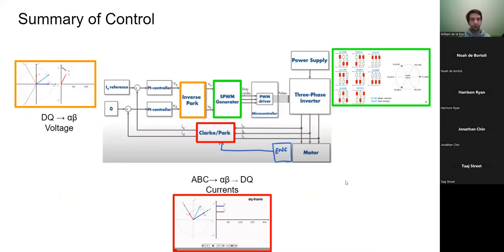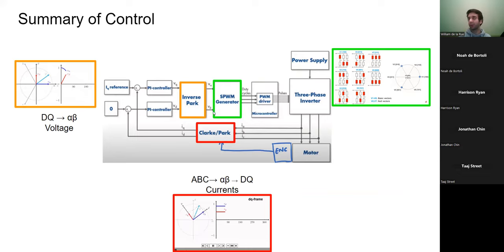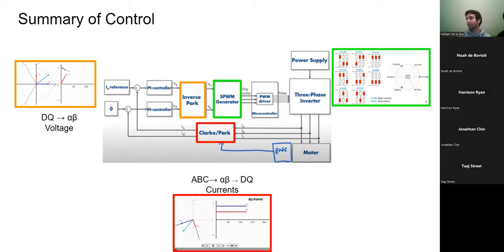Summary of last week: the three main takeaways are Clark and Park transforms. We use them to convert coil currents into DQ currents, run those through the control loops, then do an inverse Park transform to convert DQ voltages to alpha/beta voltages. The space vector PWM block takes that and converts to duty cycles. This is all contained in a single block inside X2C so we don't program it directly.